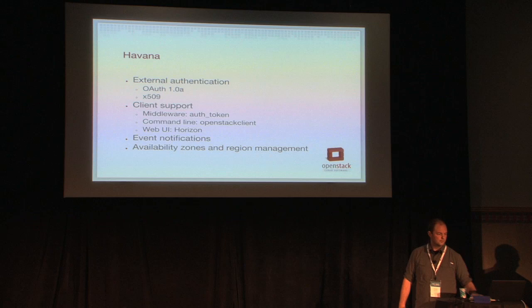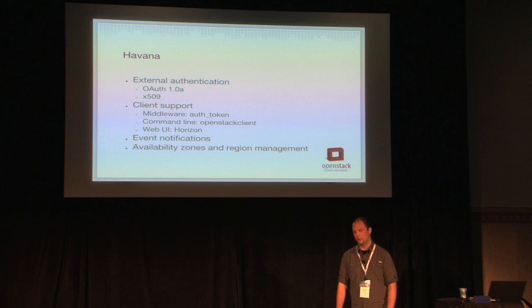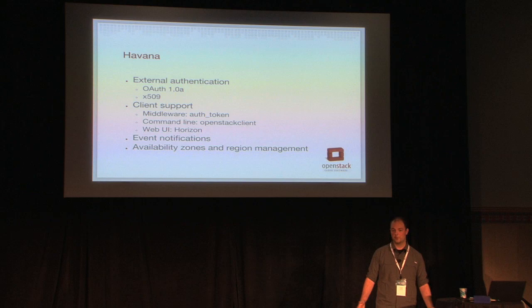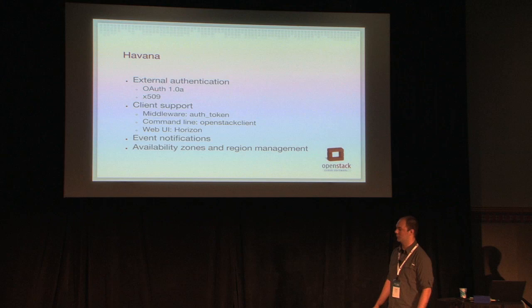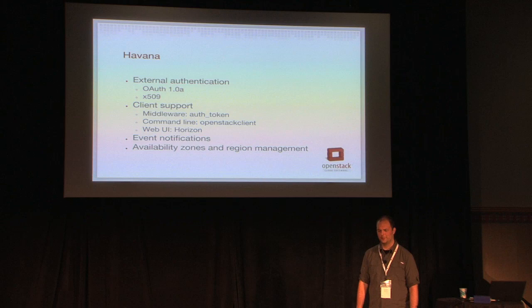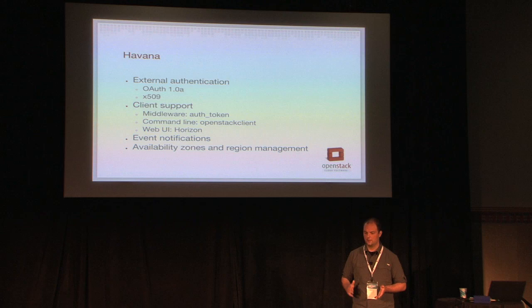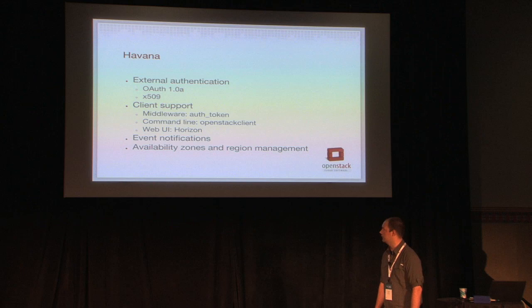For Havana, we've had a lot of discussion about OAuth since Diablo. One of the most common questions we get is why don't we support OAuth, and our answer has always been: go write it. We finally had somebody write it. It hasn't merged yet, but it's partway implemented and we have a lot of support behind it. I expect to see OAuth 1.0a specifically — that's what's currently in development. We have a lot of talk about OAuth 2 as well, and perhaps using OpenID Connect on top of that. OpenID Connect is a specification still in draft phase and still changing rapidly, so I'm not sure what we'll see in Havana — it may not land in core but you may see implementations floating around.